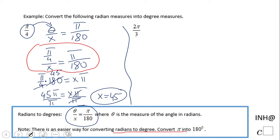Like I said here, convert pi into 180. And in my opinion, it's a lot easier. Look for simplification. For instance here, 3 goes into 180, 60 times.